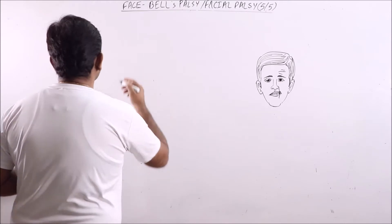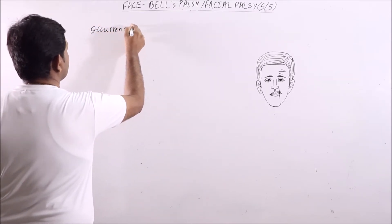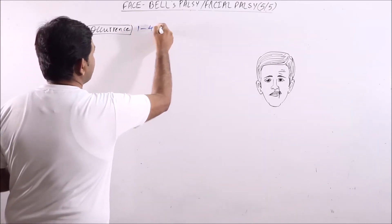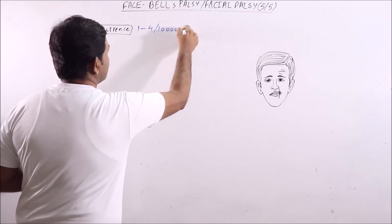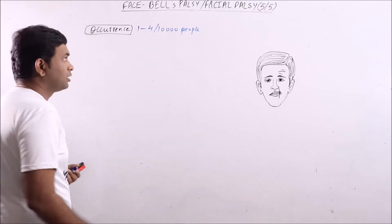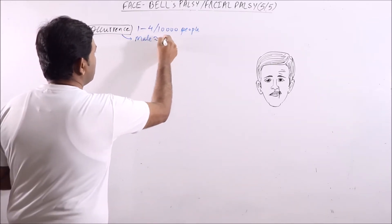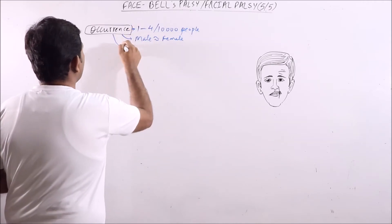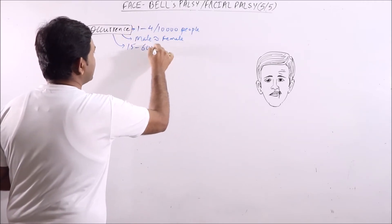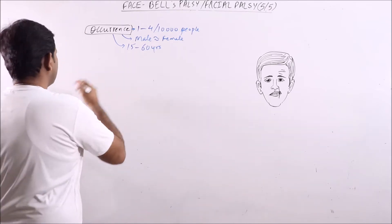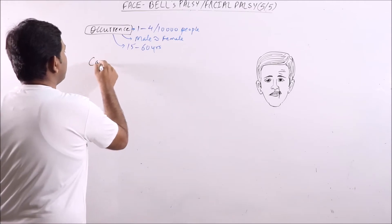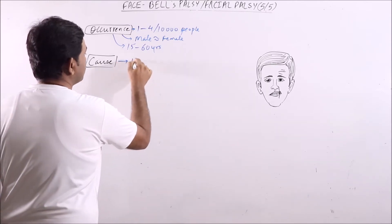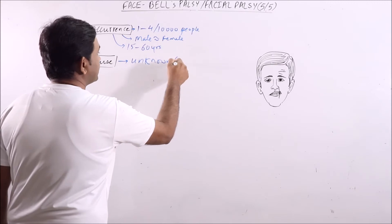Regarding occurrence, the cases are somewhere between 1 to 4 per 10,000 individuals. In male and female, the cases are equally distributed and it mainly occurs between the age of 15 to 60 years. What is the cause of Bell's Palsy? We will say that the cause is unknown — that is, idiopathic.